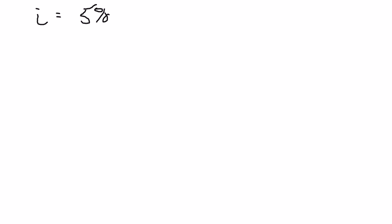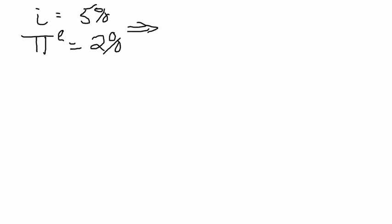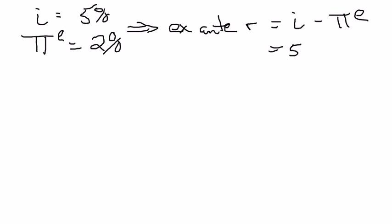Let's suppose, for the sake of argument, you're borrowing money for a year, keeping things simple. The nominal interest rate on that loan is 5%. Now, you don't know what the inflation rate is going to be over the next year, but you do have some expectation. Pi (π) is our abbreviation for inflation, and π^E stands for expected inflation. Let's suppose you think inflation is going to be 2%. That means the ex-ante real interest rate is the nominal interest rate minus the expected inflation rate: 5% minus 2% equals 3%. So you expect to pay a real interest rate — a real cost of borrowing — of 3%.